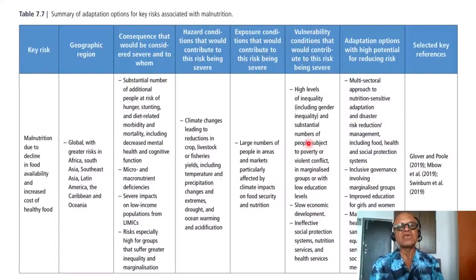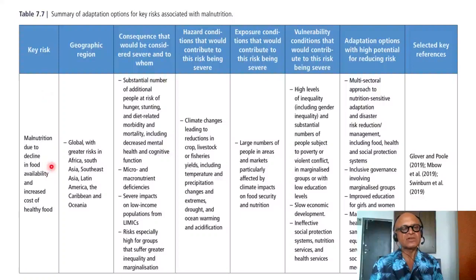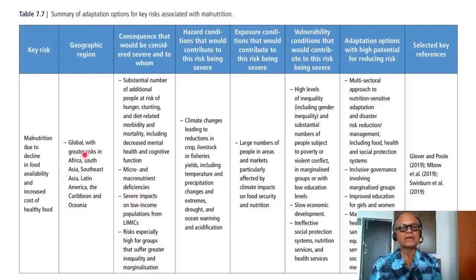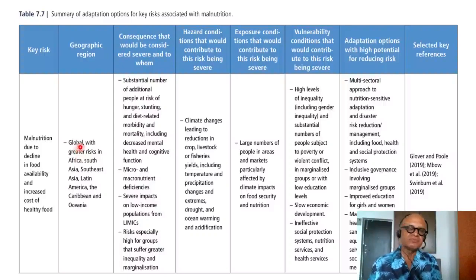Moving to the summary of adaptation options for key risks associated with malnutrition: key risks are malnutrition due to decline in food availability and increased cost of healthy food. Geographic region is global, with greater risks in Africa, South Asia, Southeast Asia, Latin America and the Caribbean, and Oceania — reflecting findings from the IFPRI report we reviewed, where regional actions depended on adjusting imports, exports, and reducing conflicts.